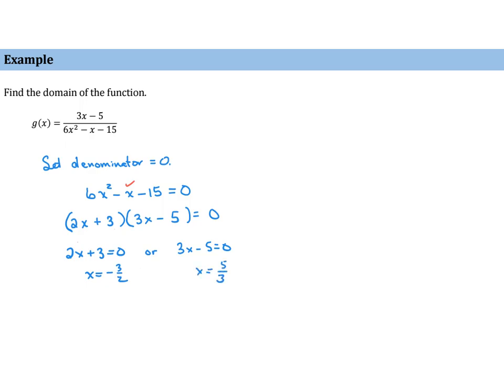So we want to exclude those values. So we'll go from negative infinity to negative 3 halves union negative 3 halves to 5 thirds and then 5 thirds to infinity.